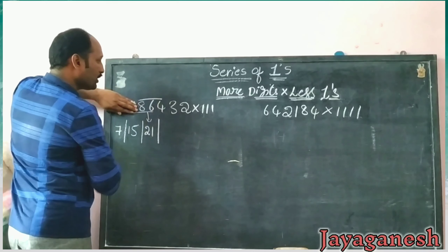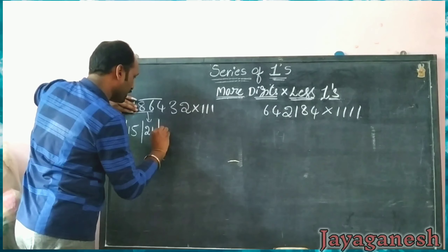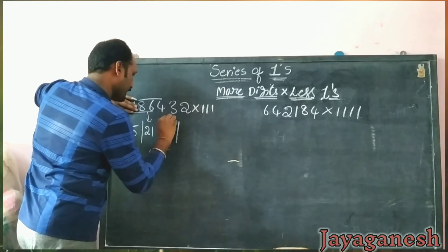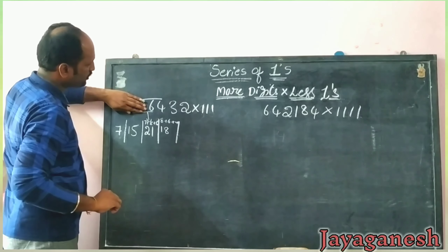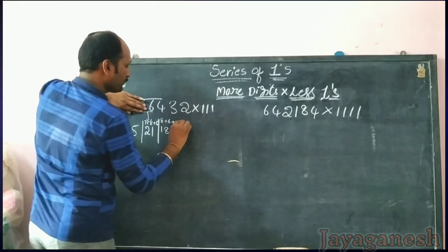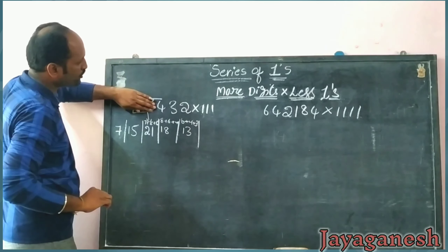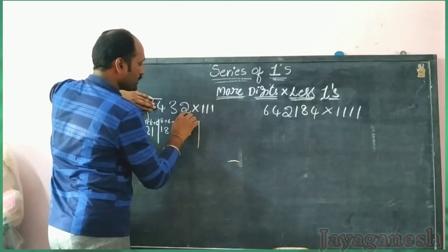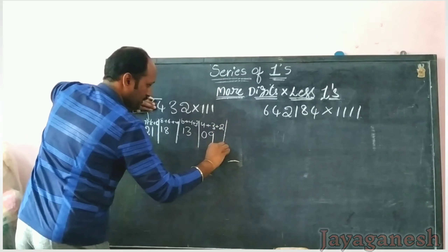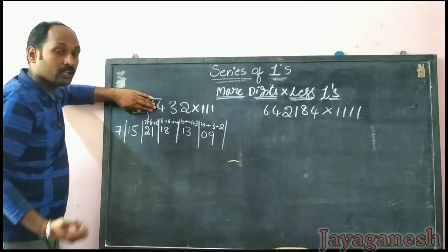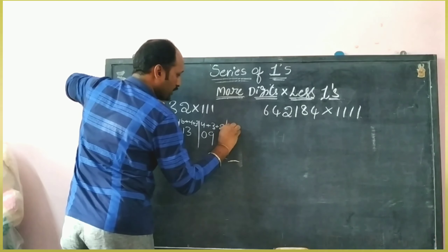Now add the next three digits. 8 plus 6 plus 4 is 18. Then again close; next three digits: 6 plus 4 plus 3 is 13. Again close; next three digits: 4 plus 3 plus 2 is 9. See — as digits increase, the three-digit additions keep increasing, just like multiplying by 11.